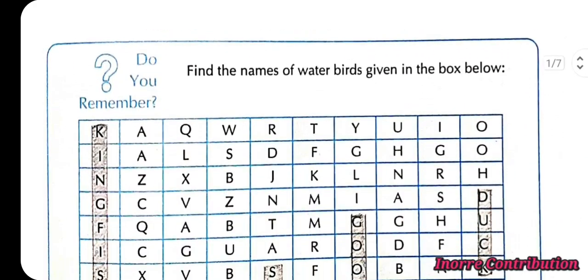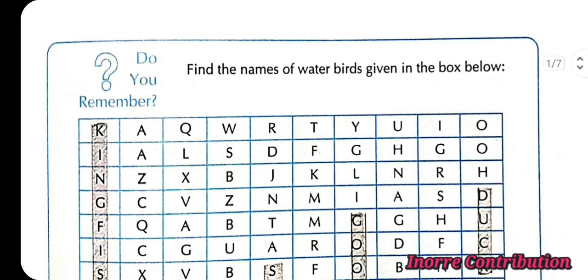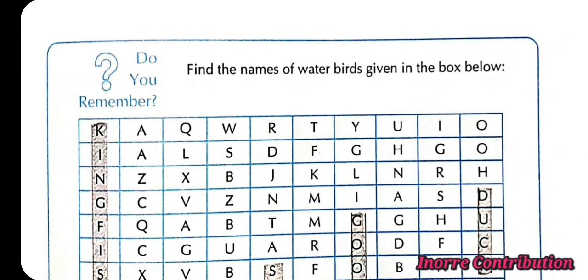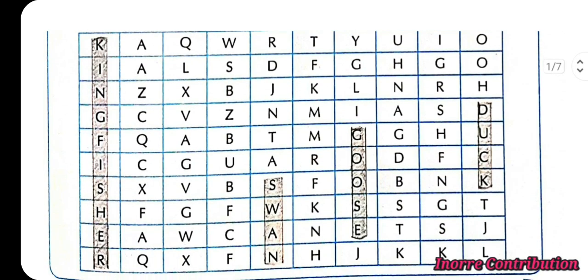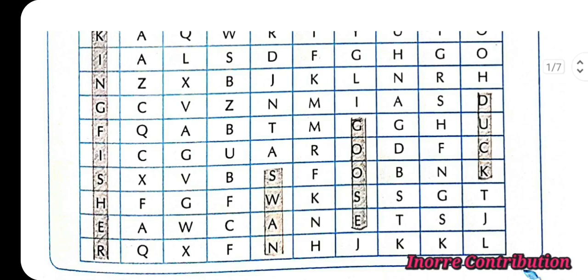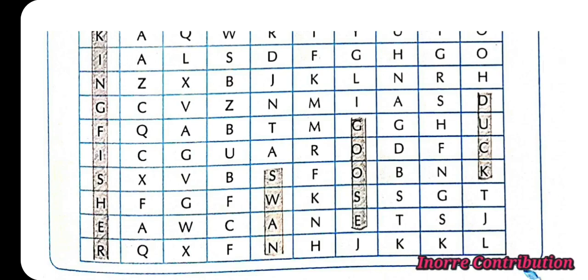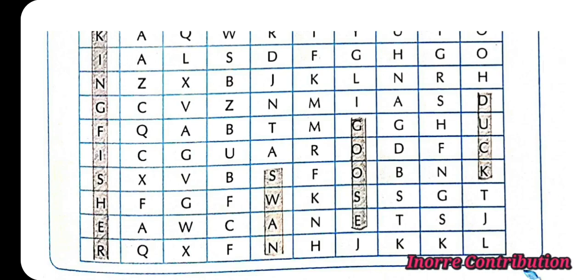Here comes the first exercise. Do you remember? Find the names of water birds given in the box below. It's your turn. Kingfisher, swan, goose, duck — you can find more.